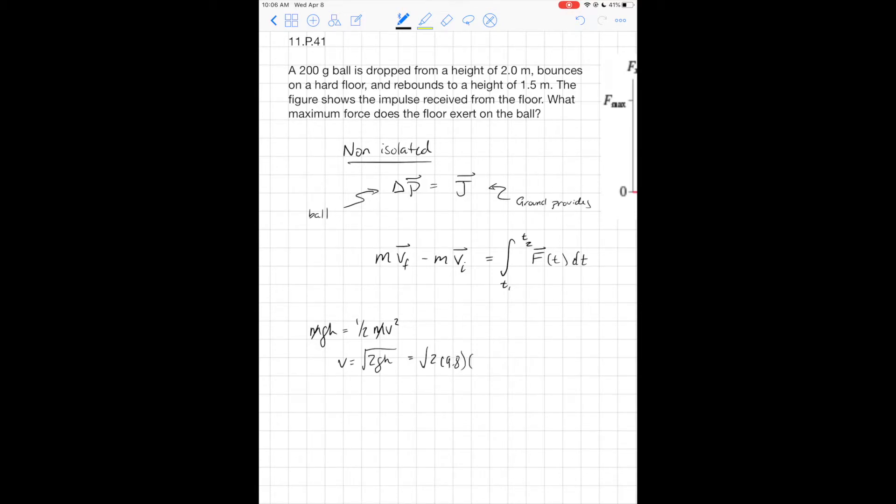If I think about how high we started off, I have square root of 2 times 9.8 times 2 meters. If I plug that into my handy dandy calculator, 2 times 9.8 times 2, take the square root, I get 6.26 meters per second.